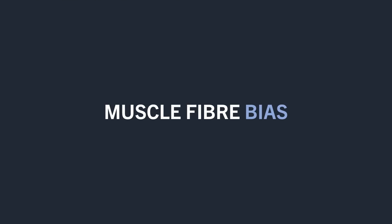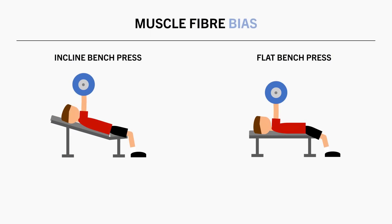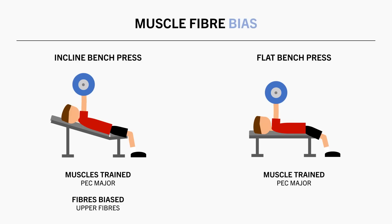Based on the anatomy of each muscle, we can bias certain fibres of a muscle, or bias specific muscles of a muscle group. For example, a flat and inclined bench press both train the pec muscles. However, we can bias the upper fibres of the pec by performing an incline press, and we can bias the middle pec fibres using a flat press. This is an example of biasing different fibres of the same muscle.